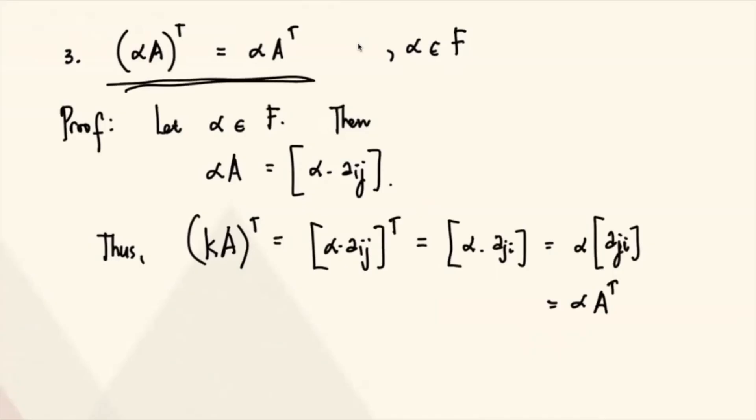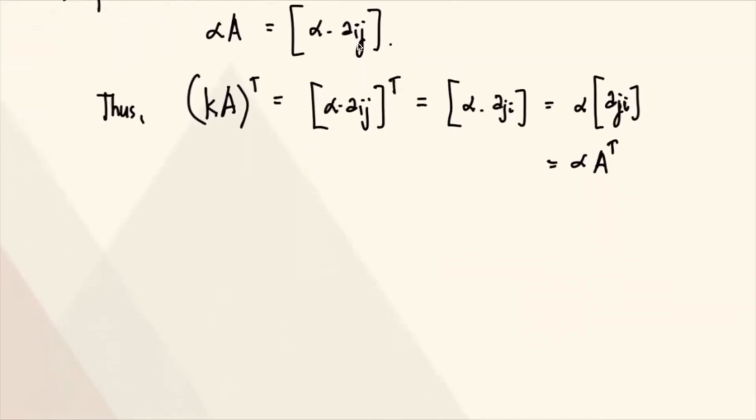So let's have, for example, our A here is 1, 2, 3, 4. Let's say our alpha is 2. So that means alpha A, this is the same as 2, 6, 4, 8. Okay. But if you take the transpose of this, so alpha A transpose, this is 2, 6, 4, 8.